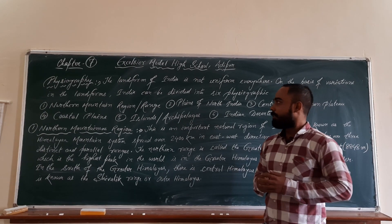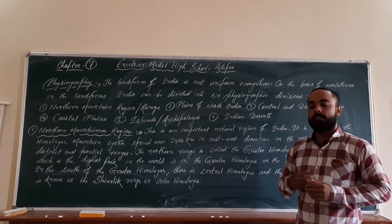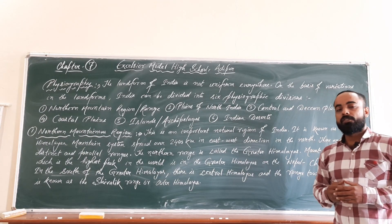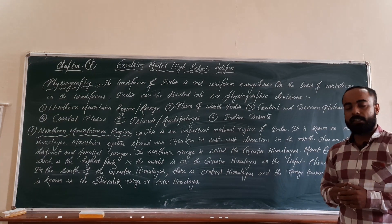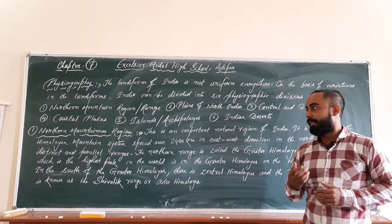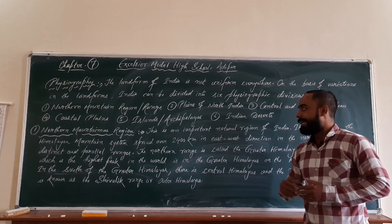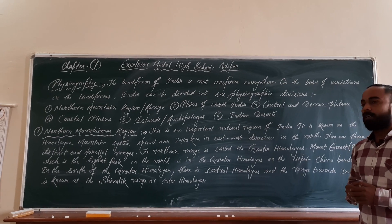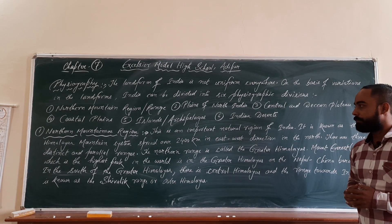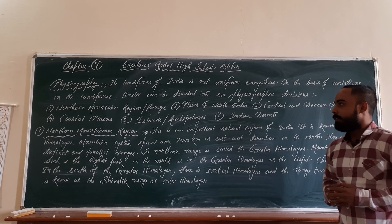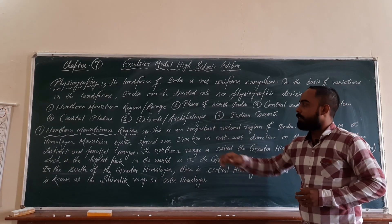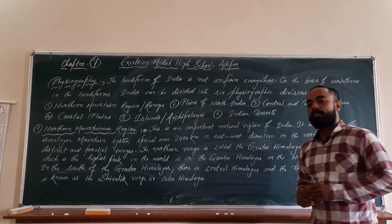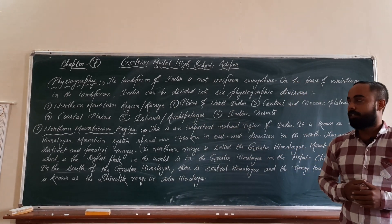As we know, the landform of India is not uniform everywhere. So on the basis of the variation that is found in the landforms, India can be divided into six physiographic divisions. Number one: Northern mountain region or range. Second: the plains of North India.